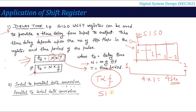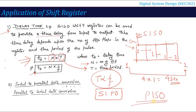The next application is serial-to-parallel and parallel-to-serial data conversion. In serial-in parallel-out mode, serial data accumulates and is then forwarded all at once as parallel data. Conversely, in parallel-in serial-out mode, data arrives simultaneously but is sent out one bit at a time serially. These are key applications of shift registers.